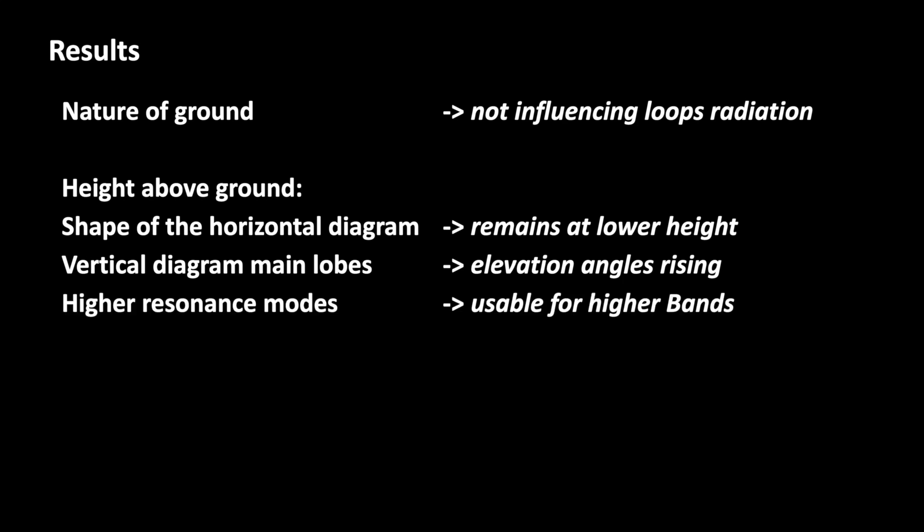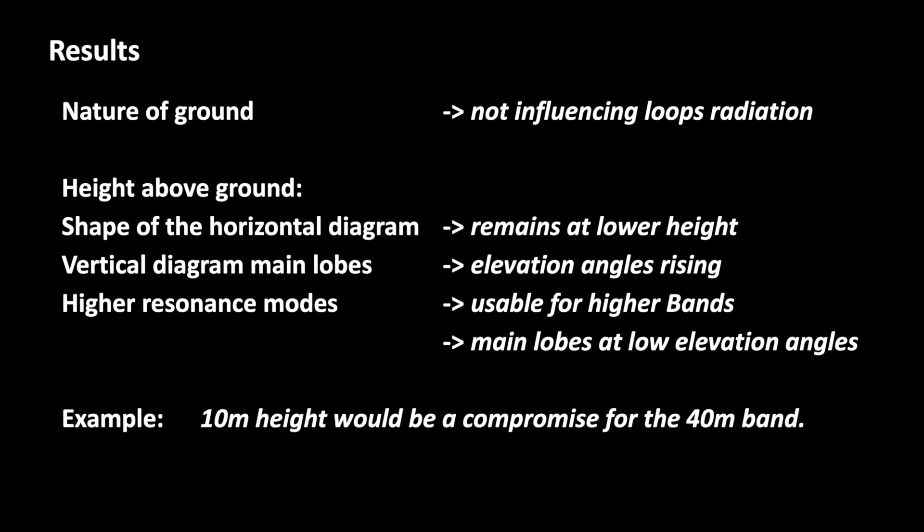Similar to the resonance modes of our loop antenna, the amateur radio bands are multiples of the fundamental frequency, allowing us to use the antenna for the higher bands. In our example, for 14 and 28 MHz, you are getting really suitable radiation characteristics at feasible heights above ground.